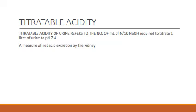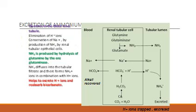Titratable acidity of urine refers to the number of milliliters of N/10 NaOH required to titrate one liter of urine to a pH of 7.4. So it is a measure of the net acid excretion by the kidney.